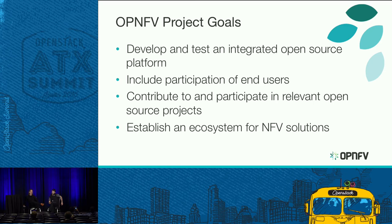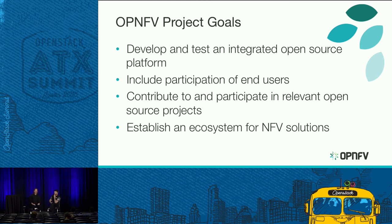There's another thing people often ask about: where is the end consumer, the end user, and how do they take influence? Usually you form a project and then create a user group — an inner circle and then a user group. Or you build something, wait for someone to sell it, and then you have users. That's the traditional open source model: build it and they will come.